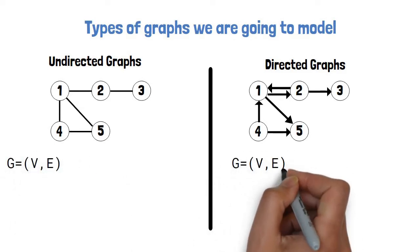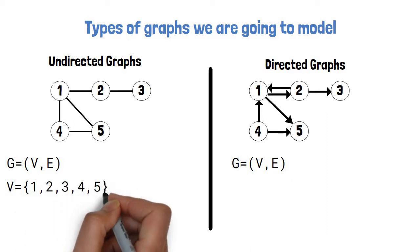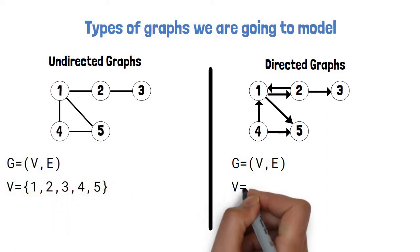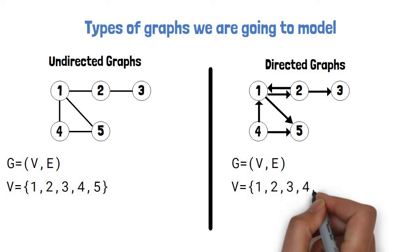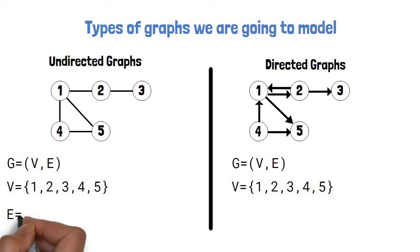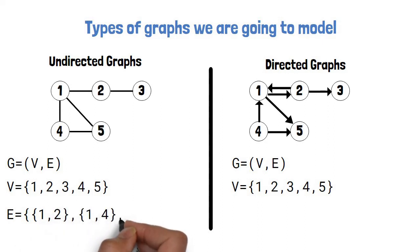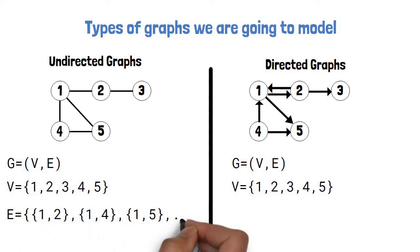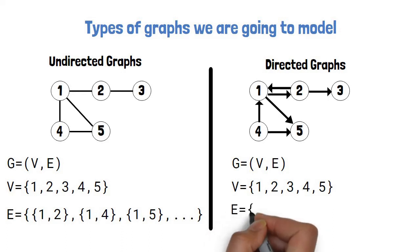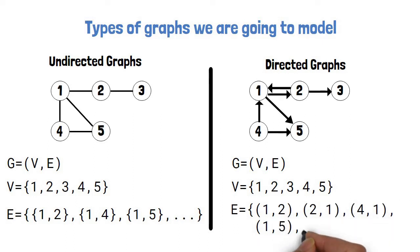Both undirected and directed graphs are defined as a pair of sets. V is a set of vertices — in the examples here it is a set of 5 vertices numbered 1 to 5. And E is a set of edges. In the undirected graph we use curly braces for edges to specify that the order does not matter, while in the directed graph we use parentheses to specify the order does matter.